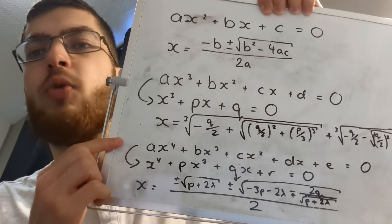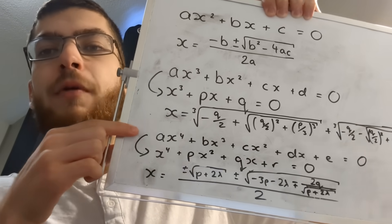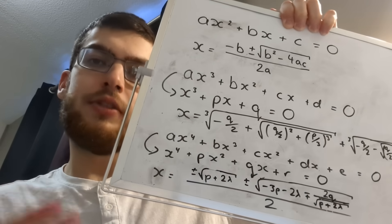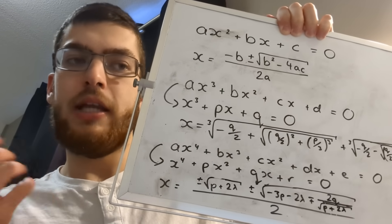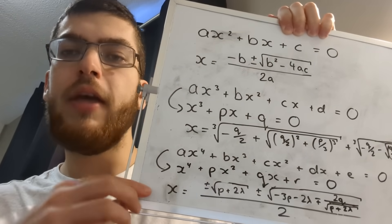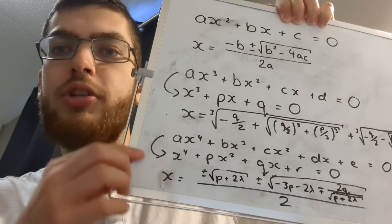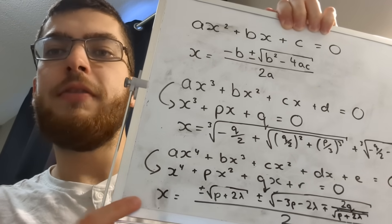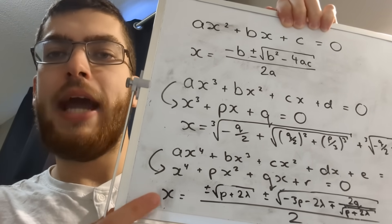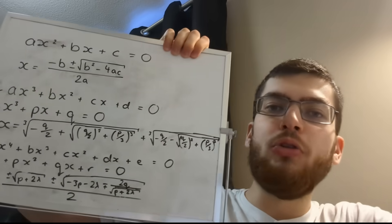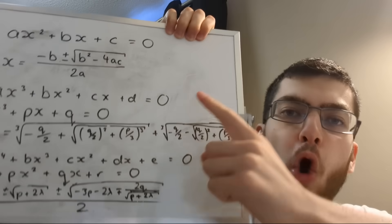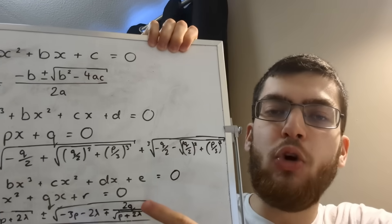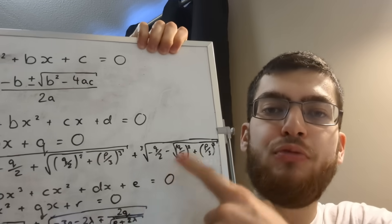And then for a quartic equation, you use Ferrari's method, which unfortunately doesn't actually involve any real Ferraris. And you can reduce it down here and then use this formula to find x on its own. But you'll notice that all of these methods involve radicals or nth roots.